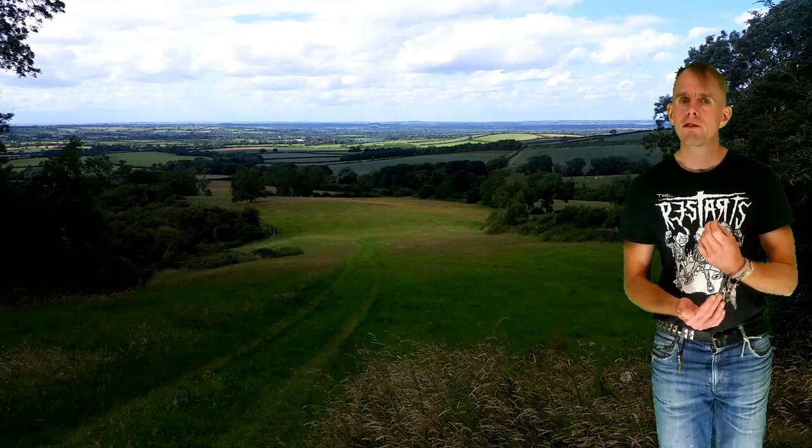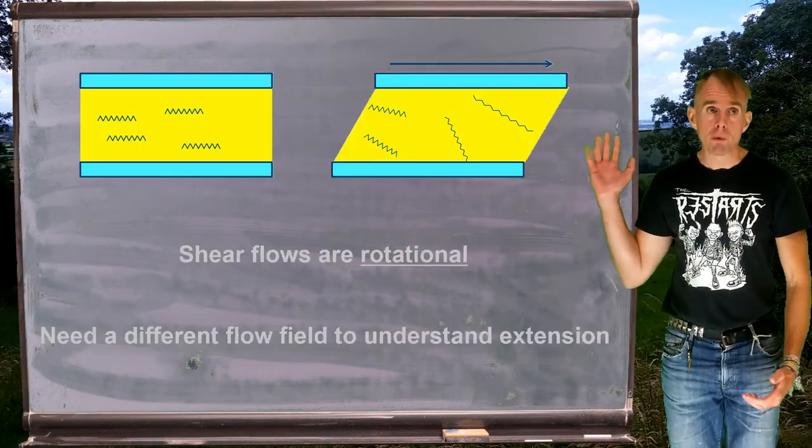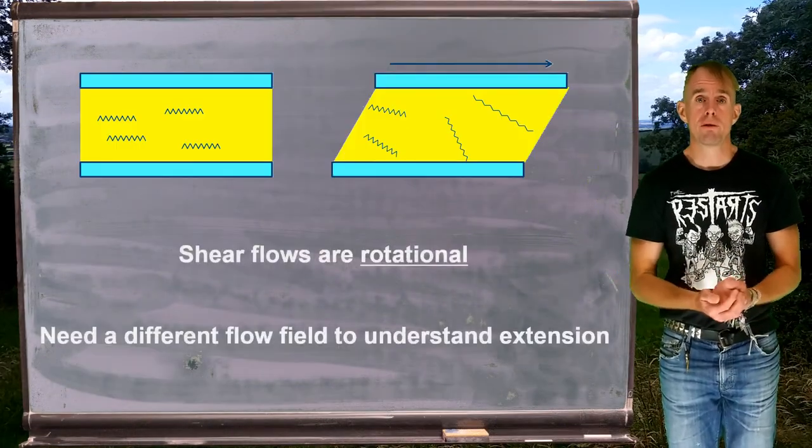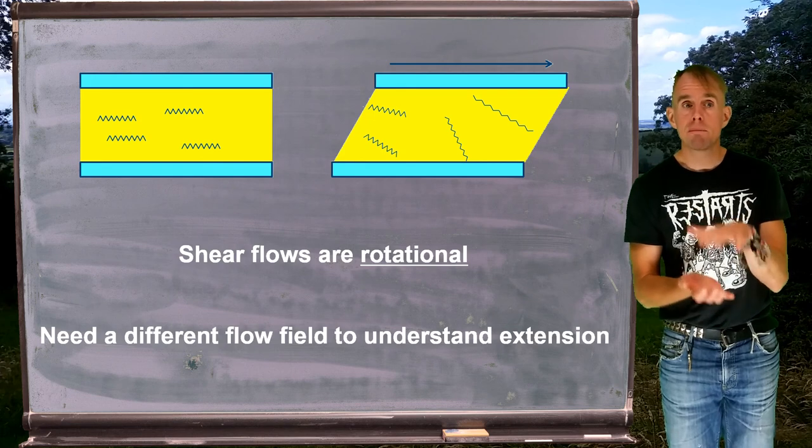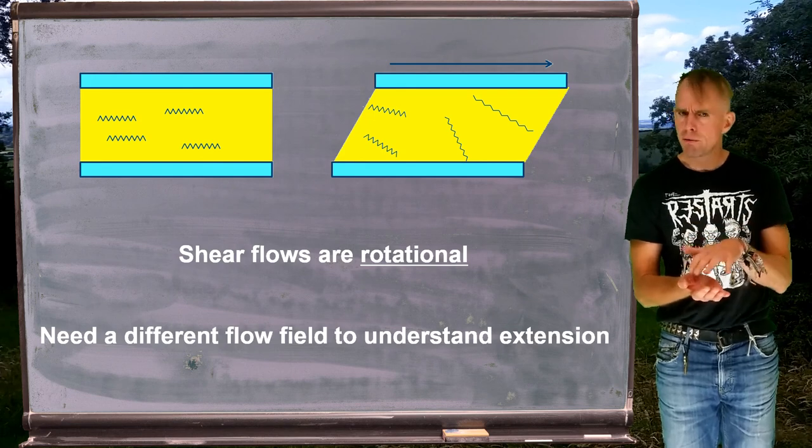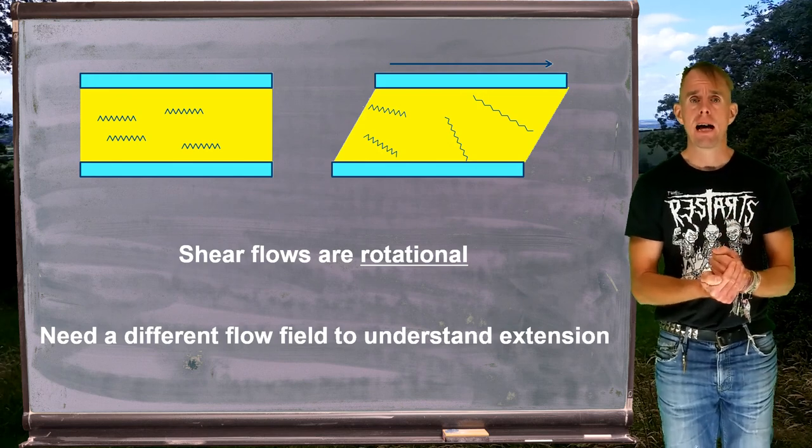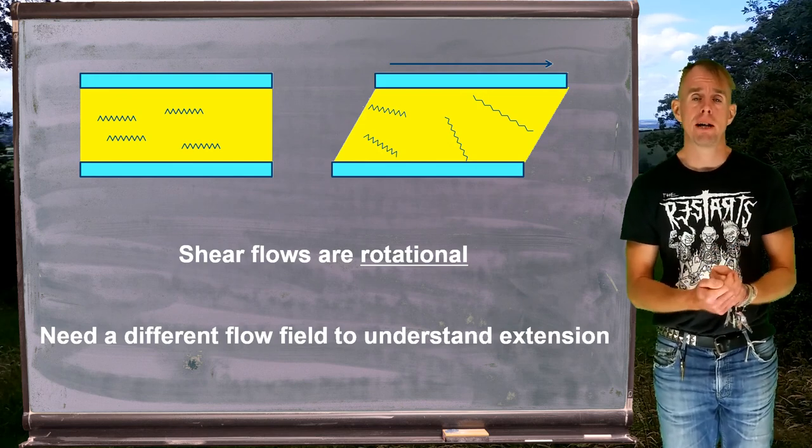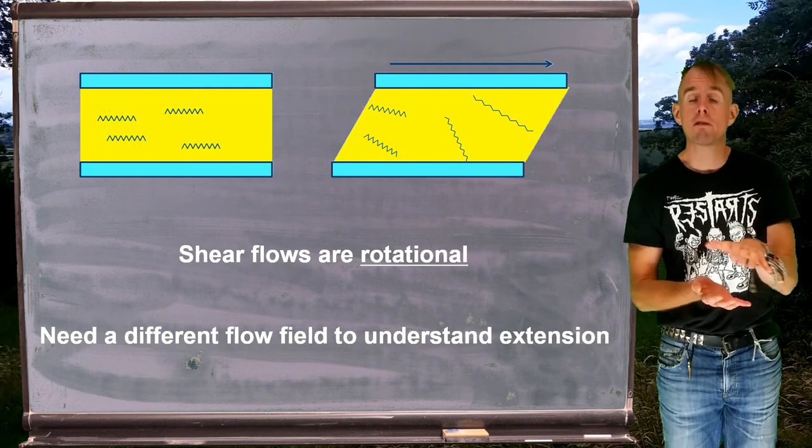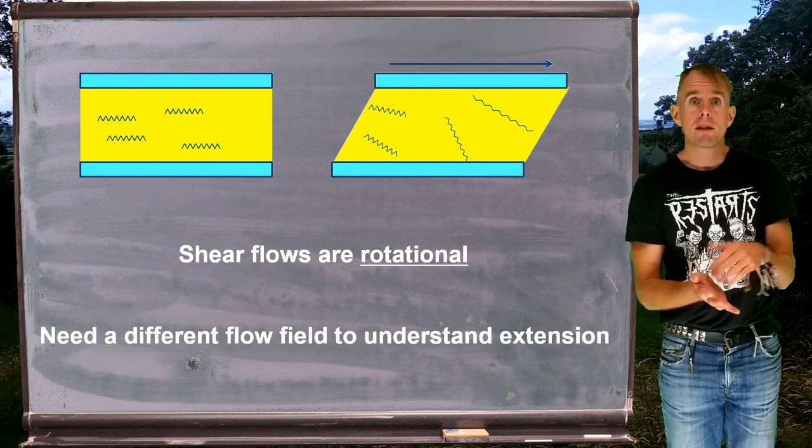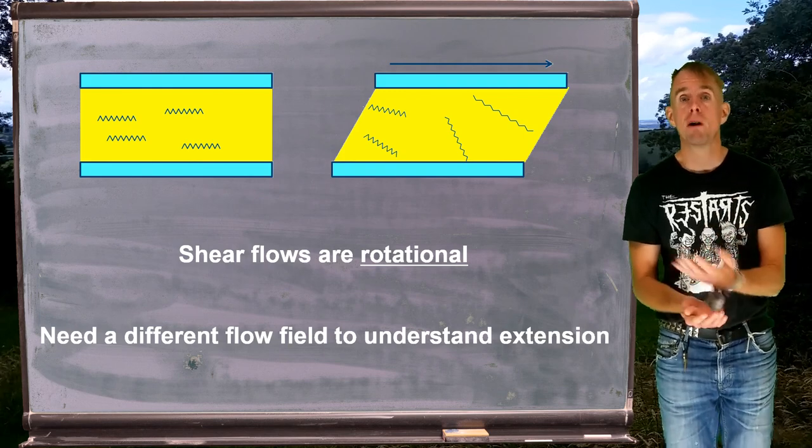So let's have a look to start with about what we mean by a complex fluid. Here on the board, I've put a cartoon of a shear flow. I have two parallel plates, top and bottom in light blue, and a fluid in between them. Now, if that fluid is a Newtonian fluid, we know what the relationship between its extensional behavior and its shear flow behavior is via a Trouton ratio. We know that the Trouton ratio will depend on the exact nature of the flow. But the extensional viscosity and the shear viscosity are related intimately together in a very predictable and known way.